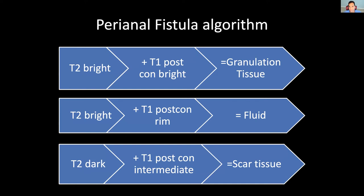Moving on to the algorithm I use, which is how I teach my residents and fellows at the University of Kentucky: you need to look at T2 and T1 post-contrast images to decipher what's in the fistula. Not all fistulae are the same. There will be fistulae that are full of fluid, which will be T2 bright and will not enhance internally. On T1 post-contrast, you will have rim enhancement - the fluid will not enhance, but the rim of the fistula will enhance, telling you there's fluid in the fistula.